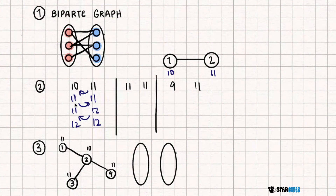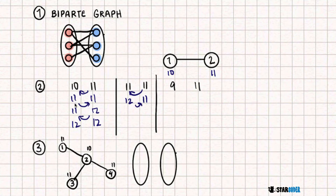Now let's say they're the same — for example, 11 and 11. We can start at either room since they're symmetrical. Let's say we move here: 12, 11, back, 12, 12. So if they're the same value, it is also possible to get both of them to 12.